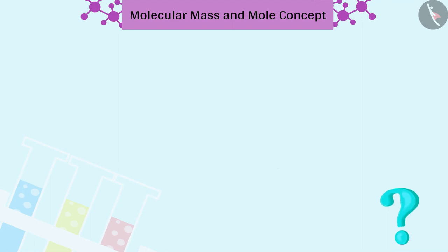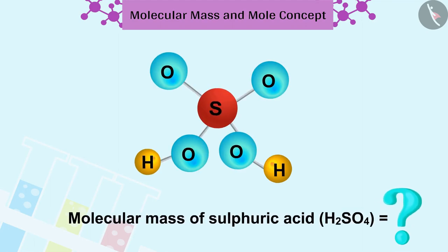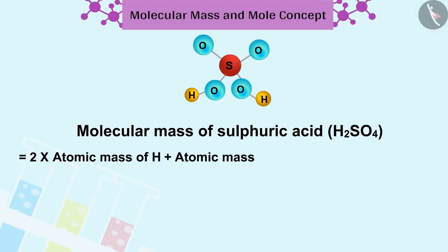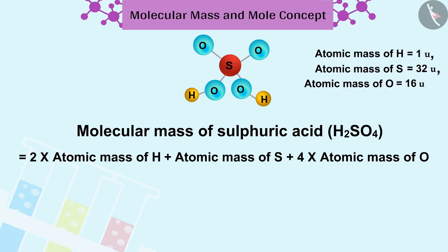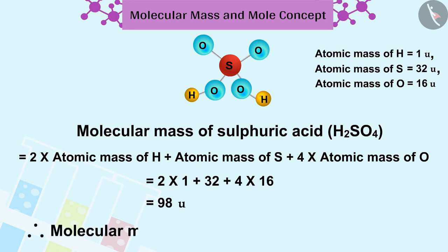Now can you find the molecular mass of sulfuric acid H2SO4? If you want you can stop the video and find the answer. We can find the molecular mass of sulfuric acid H2SO4 in this way. The molecular mass of sulfuric acid H2SO4 is 98u.